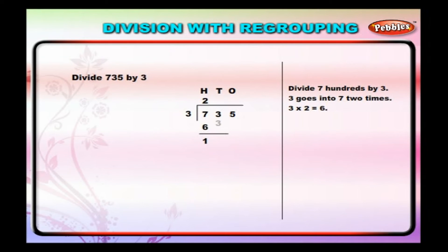Step 3: Bring down 3 tens. Now 100 plus 3 tens is equal to 13 tens. Divide 13 tens by 3. 3 goes in 13 four times. 3 into 4 is equal to 12.